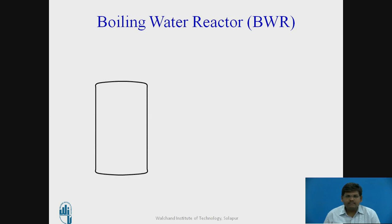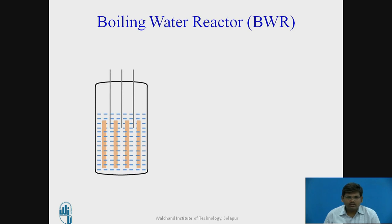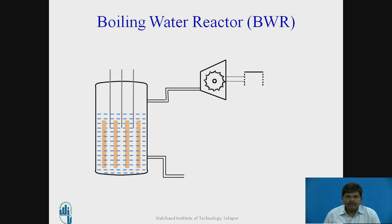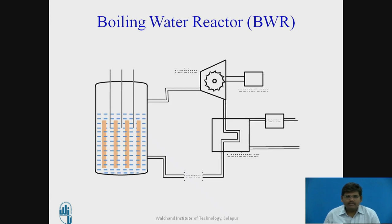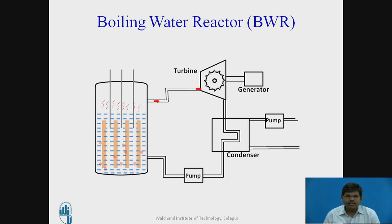Let us see the elements of the boiling water reactor. This is the reactor core, fuel elements, control rods filled with water, turbine, generator, condenser and cooling system. When a neutron is bombarded on the Uranium fuel, the chain reaction starts and because of this, a large amount of energy is released. Because of this energy, the water surrounding the Uranium fuel starts getting heated and steam is generated. This steam is allowed to pass over the turbine, which rotates the turbine at the desired RPM. This turbine in turn rotates the generator, generating electricity.